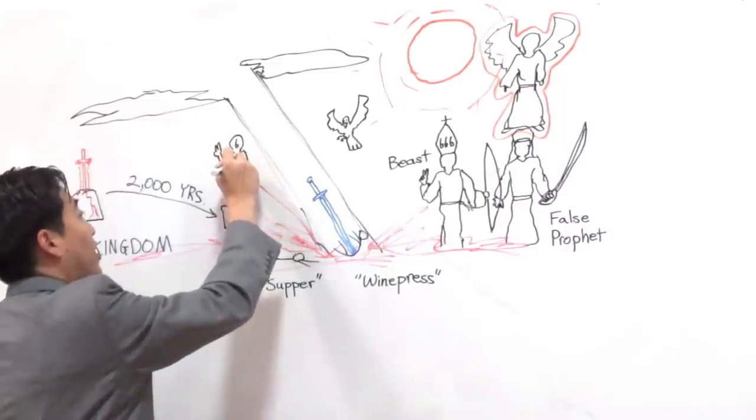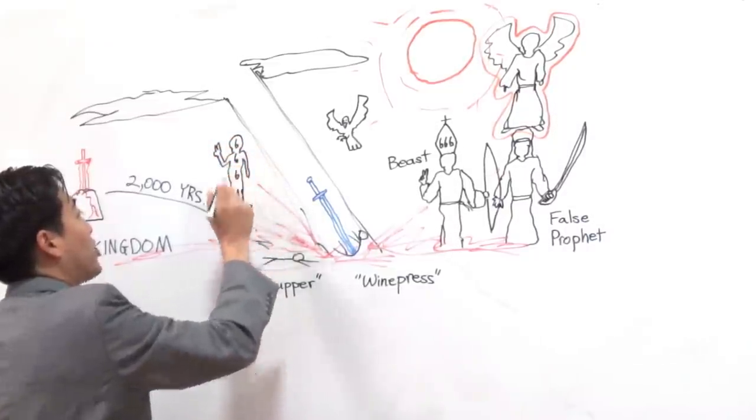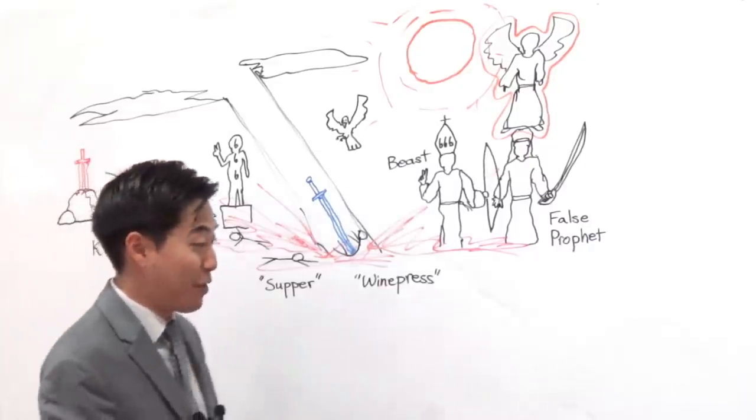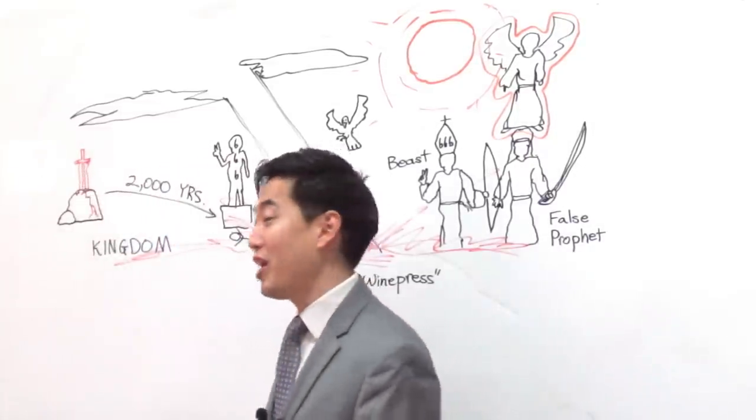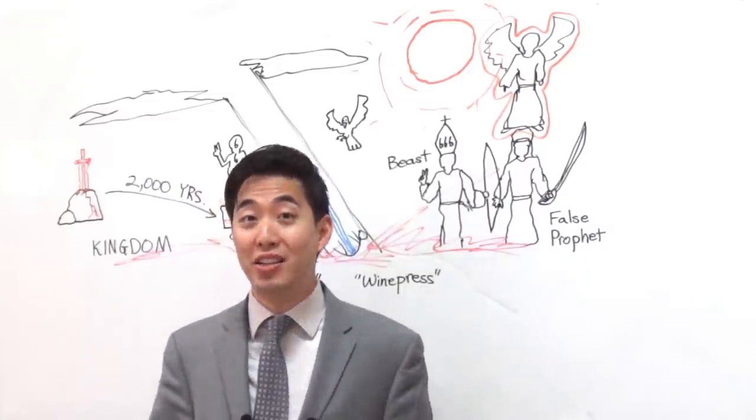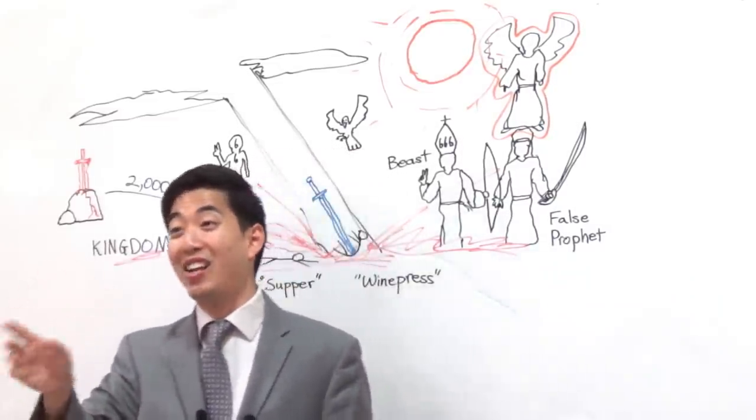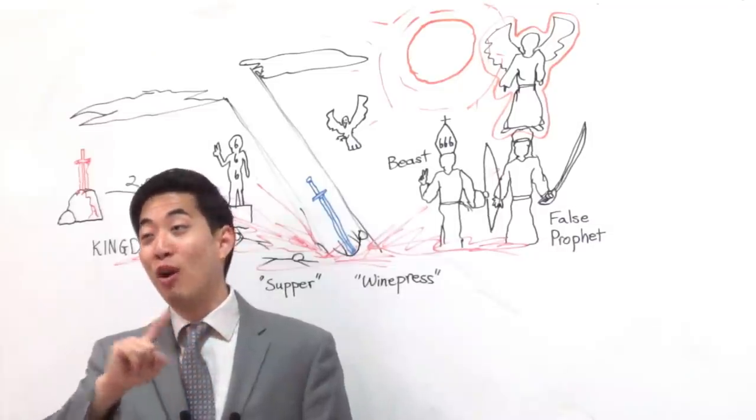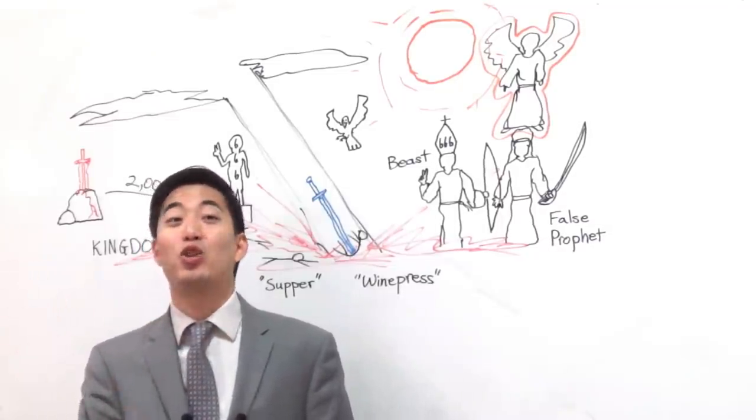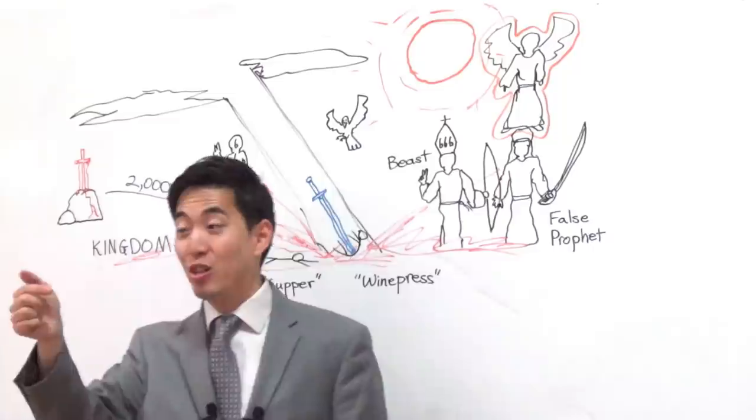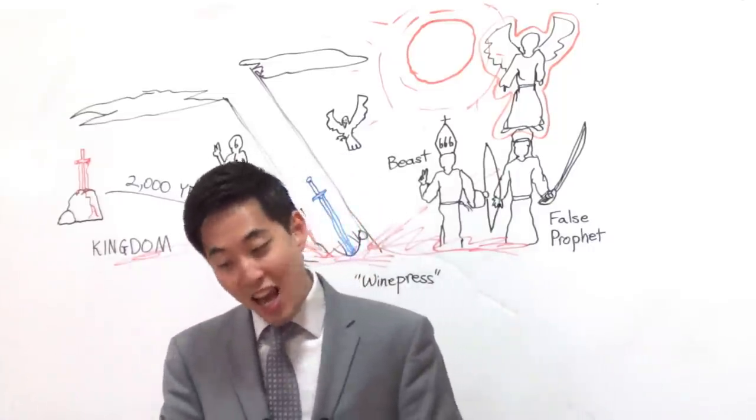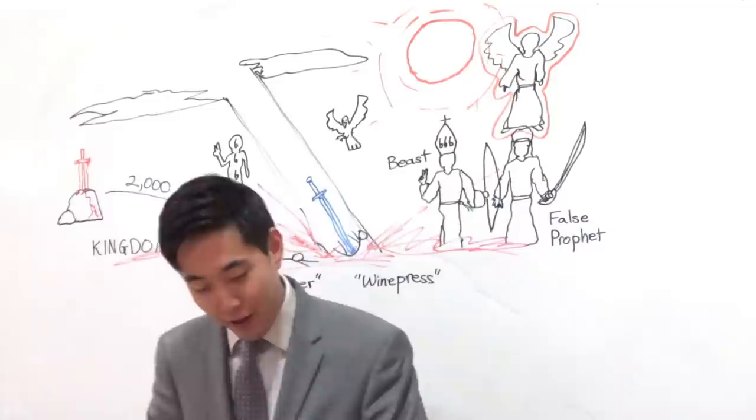So they're going to worship this image over here. It is very interesting that the image that is mentioned, 666, was Nebuchadnezzar's image, which is interesting. And Nebuchadnezzar, remember, he is a type of the Antichrist, which we studied in our Revelation studies on Revelation chapter 12, seven-headed dragon. Nebuchadnezzar was one of those heads.